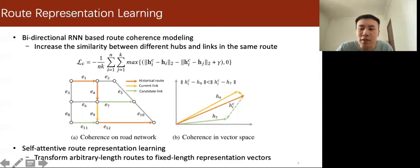We use bidirectional recurrent neural network and triplet loss to capture route coherence. The main idea of route coherence modeling is increasing the similarity between different hubs and links in the same route.